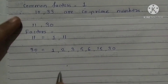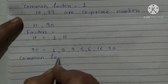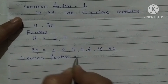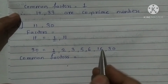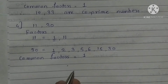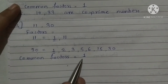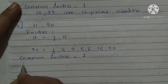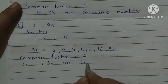Now we have to find the common factors. Observe the factors and write the common ones. Underline them. Here is 1 and here also 1. Is there any other common factor? No. So only 1 is the common factor. Therefore, 11 and 30 are co-prime numbers, as the common factor is only 1.